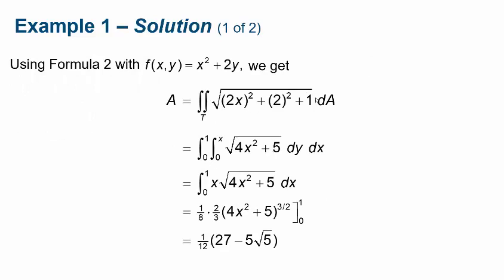Cleaning up the inside of the radical, we get the square root of 4x squared plus 5. Since we're doing dy first, this is just a constant — straightforward. Integrating gives y evaluated from 0 to x, so we replace y with x. This remaining integral is a u-substitution: let u be the inside of the radical. We end up getting (1/8)(2/3) times (4x squared plus 5) raised to the 3/2 power, then apply the fundamental theorem of calculus with bounds 0 to 1.